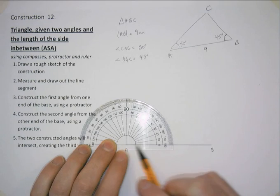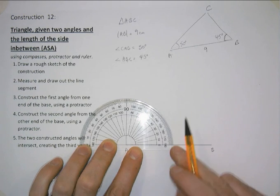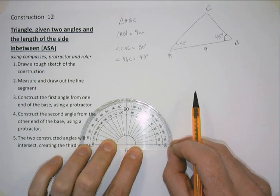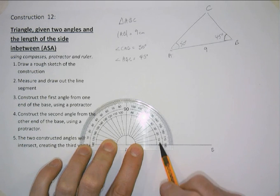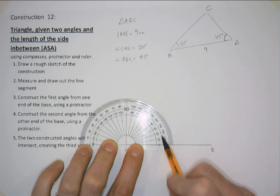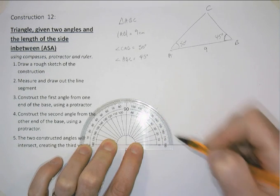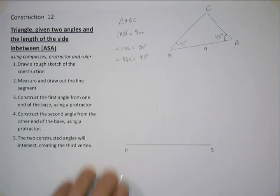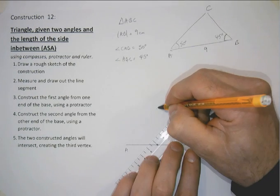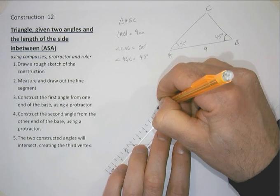line of protractor in line with my line segment. It's going through this 0 here, so I'm going to use the inside scale. So moving up to 50 on the inside scale and out. Create a marker, which I can now join up with A and extend beyond.